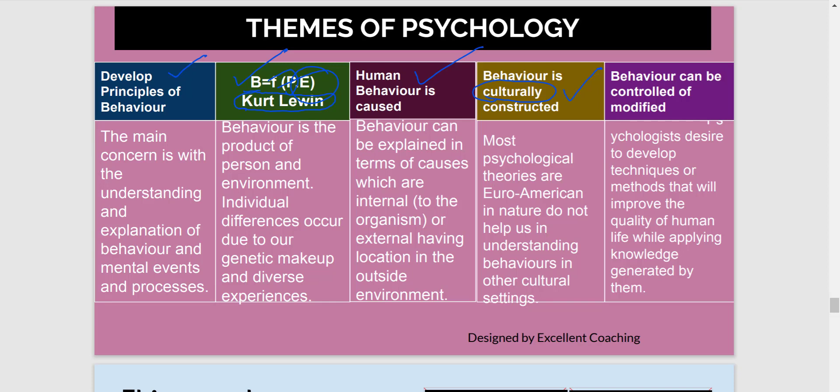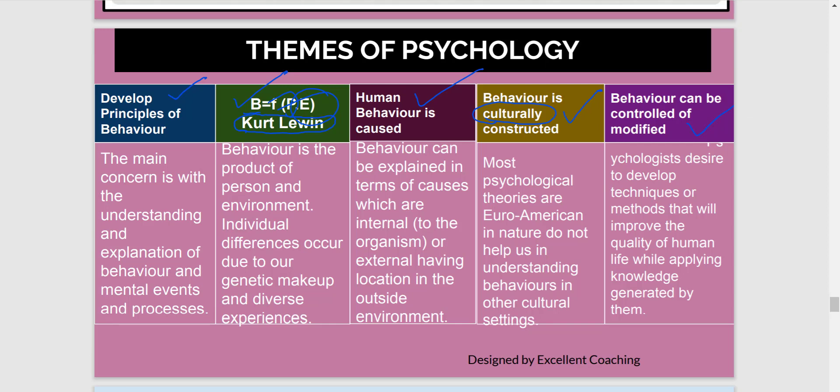The last theme is that behavior can be controlled or modified. If we do sufficient research and find out the causes and principles, we can apply that knowledge to solve people's problems. The psychologist's goal is to develop certain techniques and methods that can improve the quality of life of people by solving their everyday problems — applying the knowledge gained to help people develop into better human beings. These are the five themes of psychology.